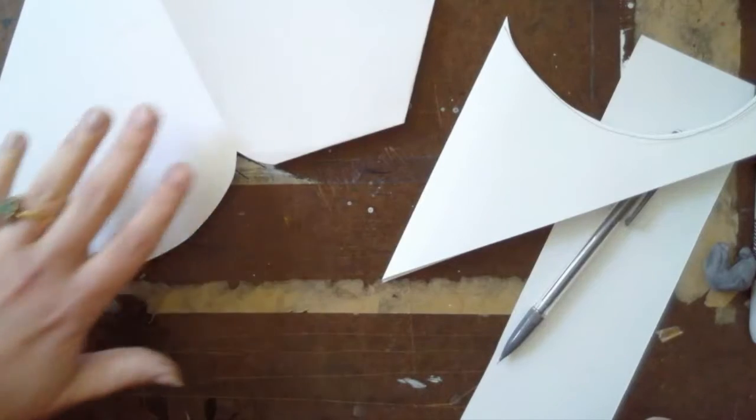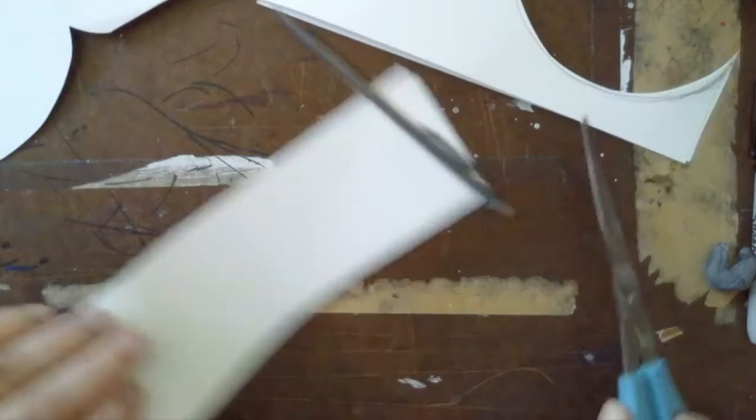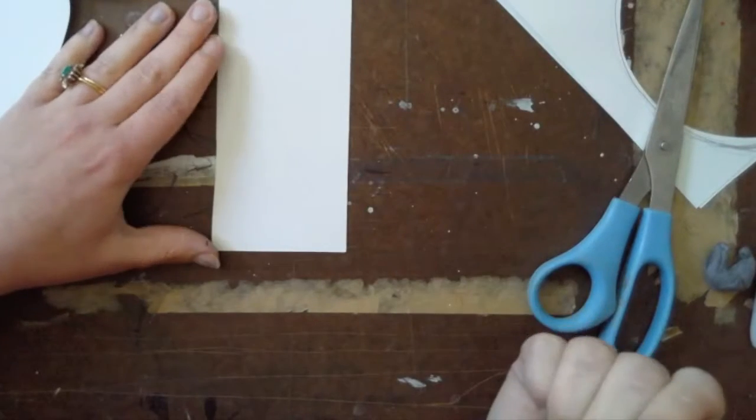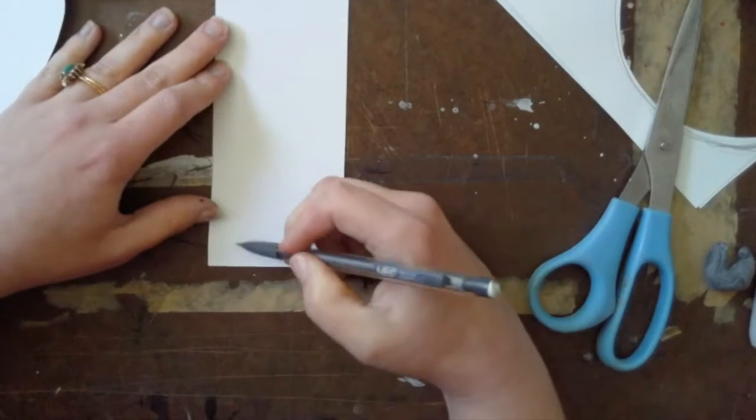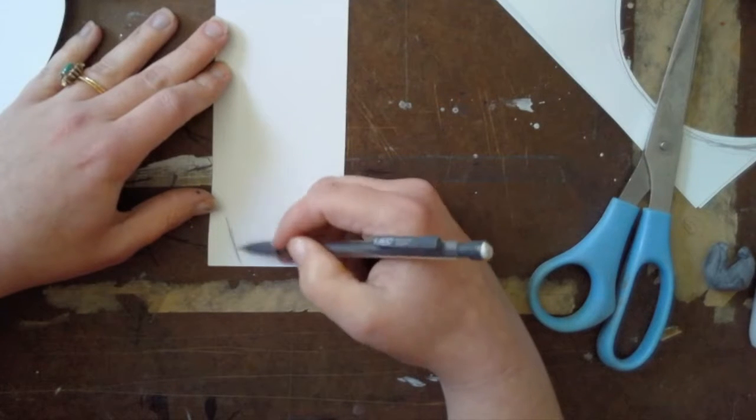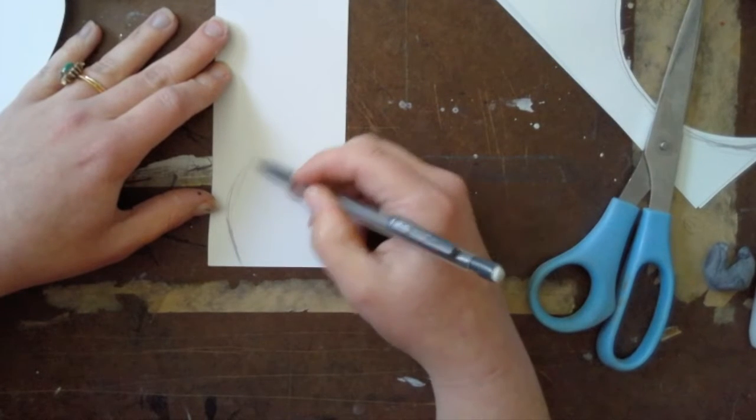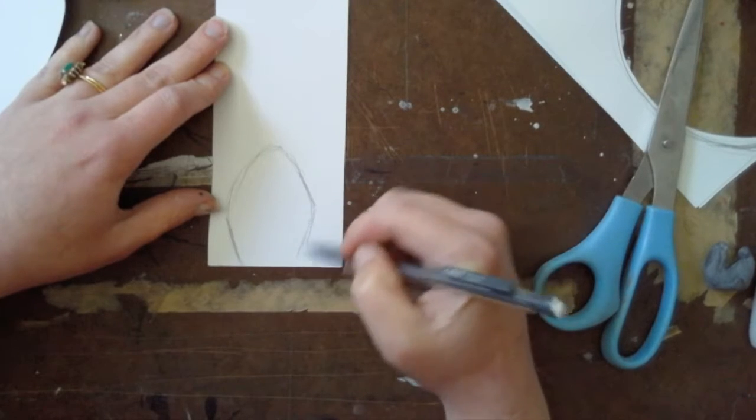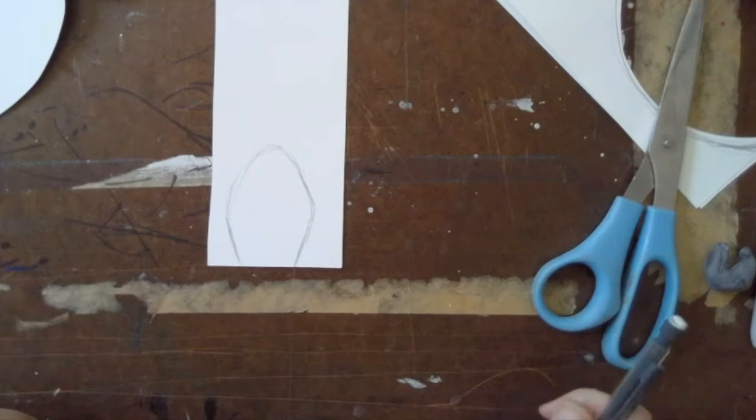The straighter lines are going to be where the nose goes. I'm going to take my scrap of paper and I'm going to use that to draw the ear and the horn as well.